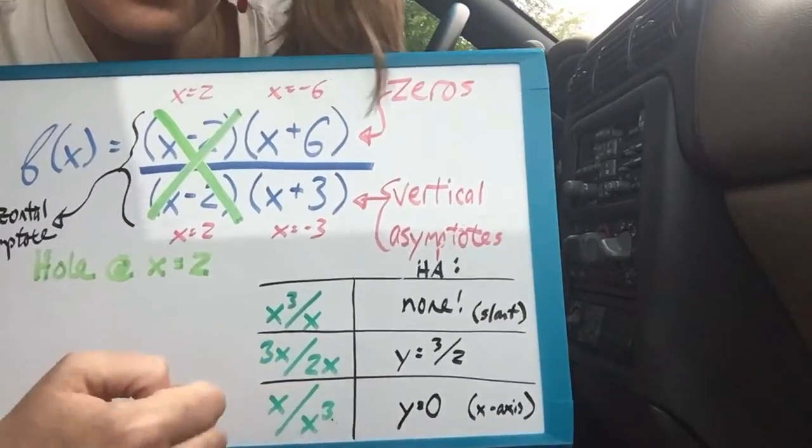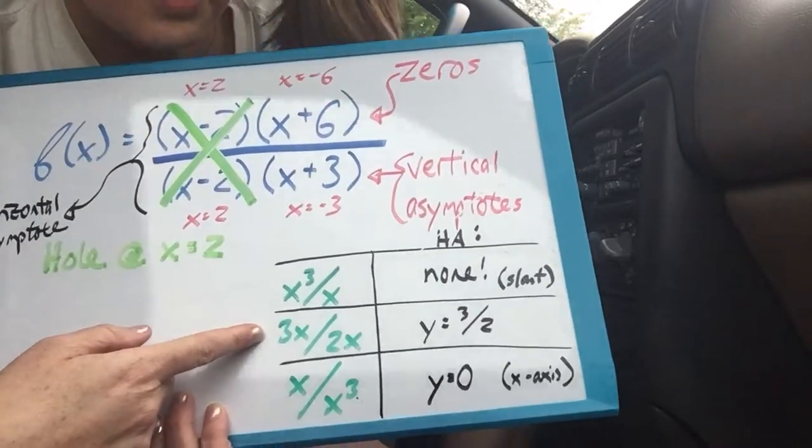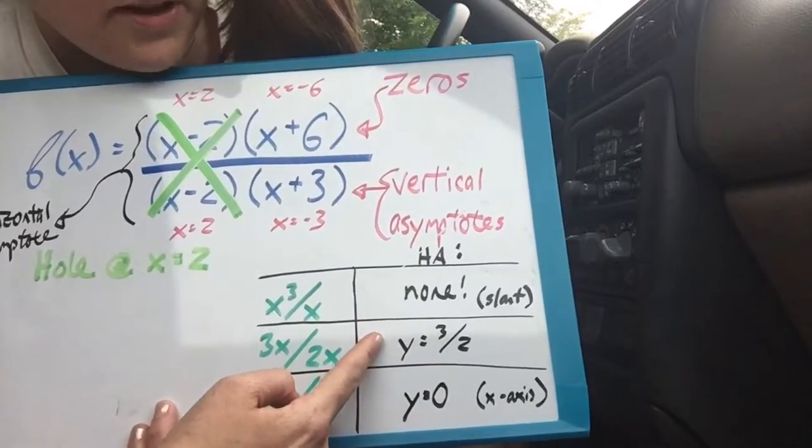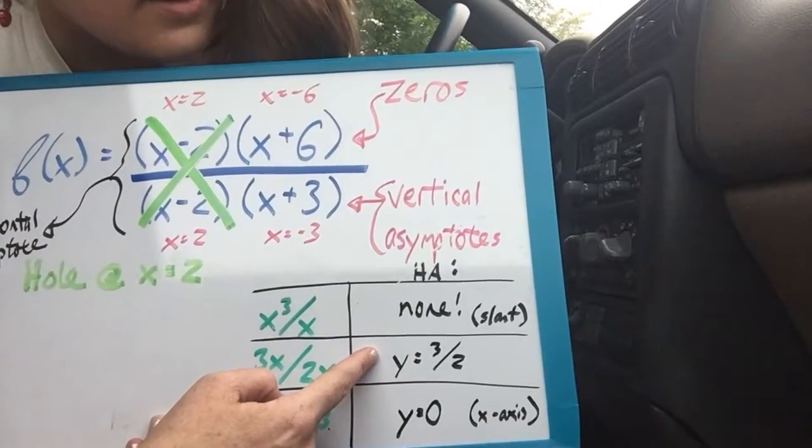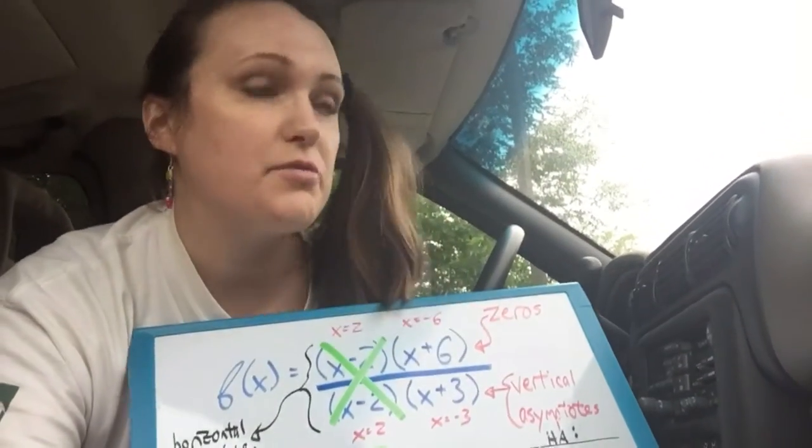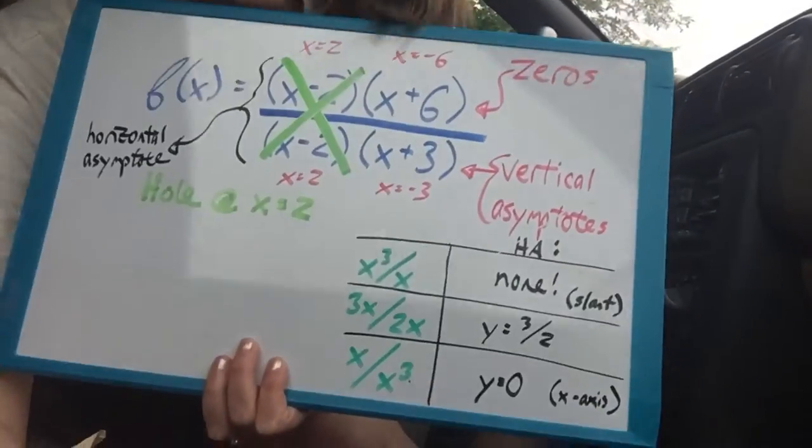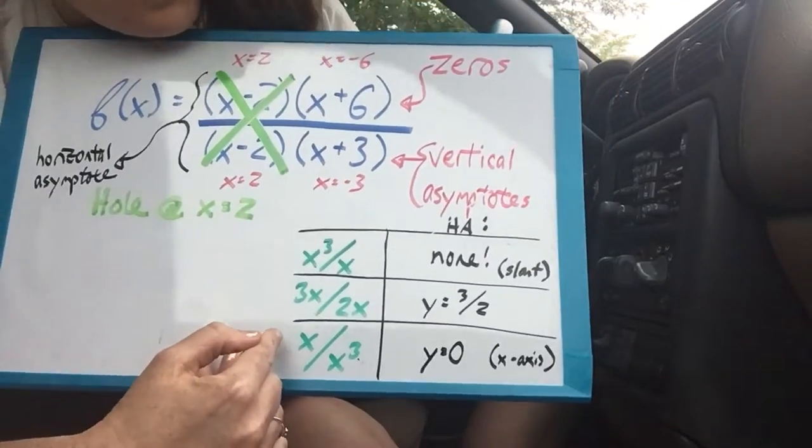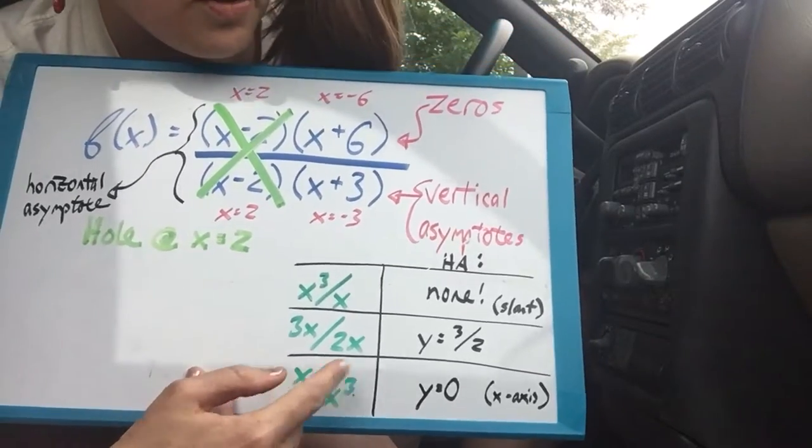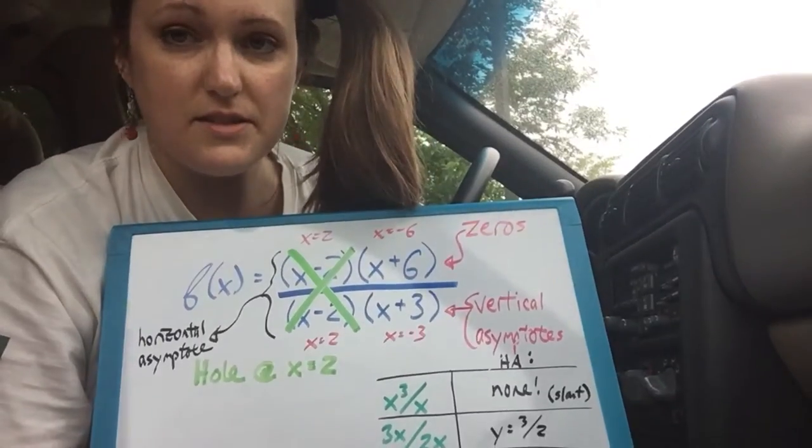So I went ahead and just made up coefficients in this example to show that if the coefficients were 3 and 2, then your horizontal asymptote would be a horizontal line, which is y equals 3 halves. So you literally go in your graph, you find 3 halves on the y-axis, and then you just draw a horizontal line from there. If your degree is smaller in the top than in the bottom, then your horizontal asymptote is just the x-axis, y equals 0, and it's super awesome and easy.